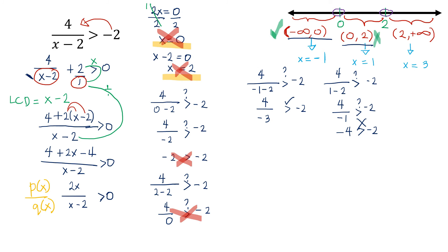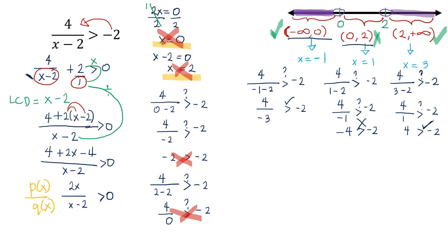For the last interval, 2 to positive infinity, we choose x equals 3. Substituting: 4 over 3 minus 2 equals 4 over 1, which equals 4. Since 4 is greater than negative 2 — all positive integers are greater than all negative integers — the last interval is also a solution. On the number line, we shade the first and third intervals since they are both solutions.